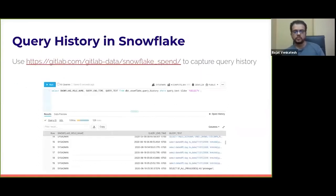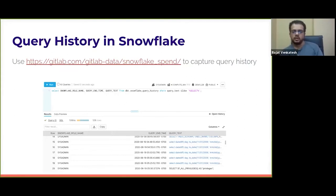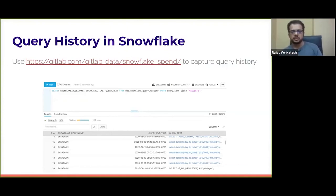I'll show a couple of examples. The first is capturing query history in Snowflake. There's an open source project called Snowflake Spend by GitLab, which you can run through dbt — there's a dbt library available in dbt Hub. You can download dbt, download this library, follow straightforward instructions, and then schedule it through dbt to copy query history from the information schema in Snowflake into a table of your choice. Then periodically — maybe monthly or weekly — you can look at the query text to search for specific patterns and make sure there's no misuse of the data.